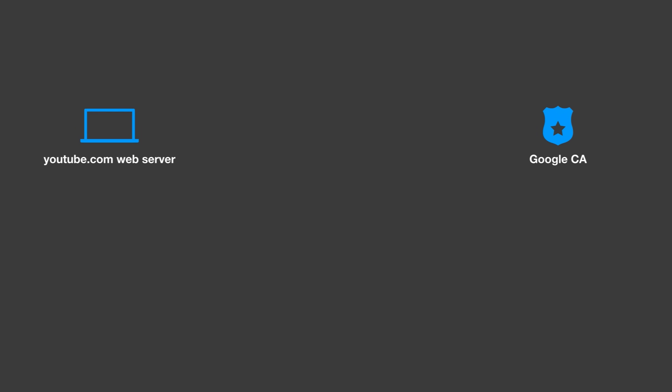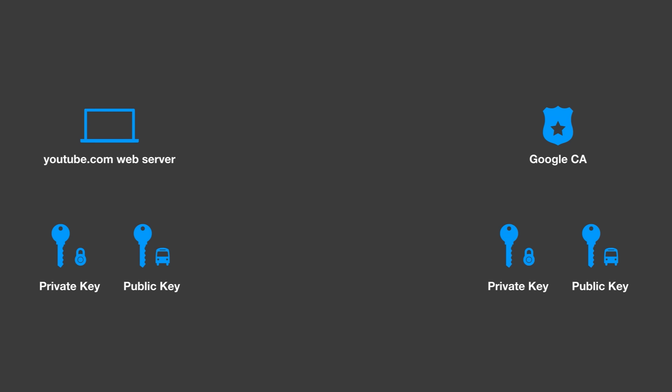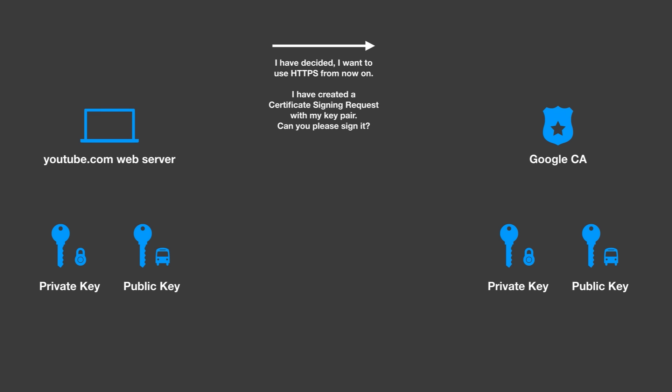Let's start with the youtube.com web server. Imagine this is before the youtube.com web server uses HTTPS — we want to secure this web server with HTTPS but we don't have anything along those lines yet. There is also the Google certificate authority, which is considered a trusted certificate authority on the internet. As any party involved in public key cryptography, the Google certificate authority has a private key and a public key. Now if the web server running youtube.com also wants to take part in HTTPS encrypted communication, they also have to create such a new key pair. And everyone can create a key pair. A person or machine running this youtube.com web server creates a so-called certificate signing request, which is made from their key pair, and basically requests the known authority to sign this certificate.